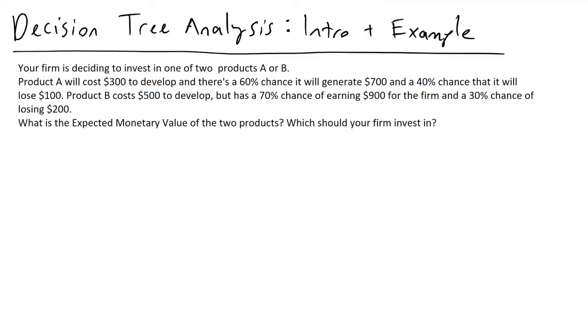What I have here is a word problem that describes a typical situation that we might encounter in industry. We have to choose whether or not to invest in product A or product B. As we're reading through the problem statement, what we're going to be picking out is that if we go with the route of product A, we're going to spend $300 to develop it, but our risk analysis have told us that there's a 60% chance that it's going to generate $700 for our company, but a 40% chance that it will lose us $100.